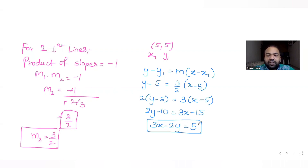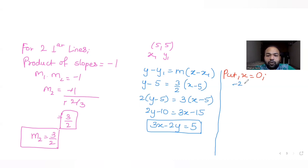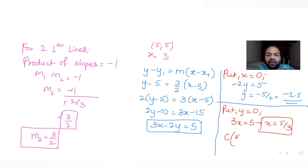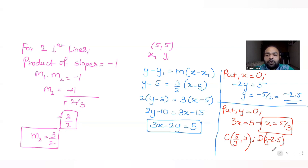Now let's find the intersection of line 3x minus 2y equals 5 with the x and y axes. Putting x equals 0, we get y equals minus 5/2, that is minus 2.5. Putting y equals 0, we get x equals 5/3. So point C, the intersection with the x-axis, is (5/3, 0), and point D, the intersection with the y-axis, is (0, minus 2.5). We now know C and D.